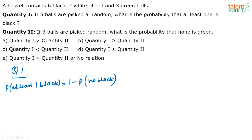Out of 15 balls, I am picking 5 balls. The formula for probability is favorable cases divided by total number of cases. The total possible ways to pick 5 balls from 15 is 15C5. My required case is where I am not picking any black ball. I leave out the 6 black balls, so other than those 6 black balls, there are 9 other balls. If I pick any of those 9 balls, the condition is satisfied. So the probability that no black ball is picked is 9C5 divided by 15C5.